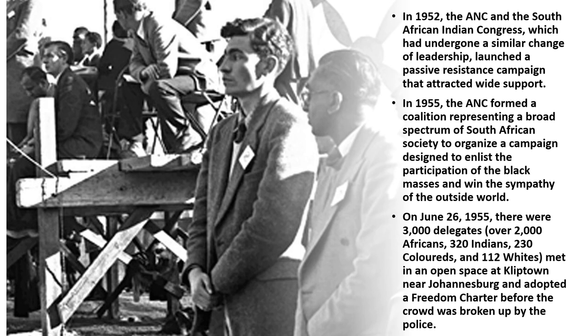In 1952, the ANC and the South African Indian Congress — which had undergone a similar change of leadership — launched a passive resistance campaign and attracted wide support. Large numbers of volunteers defied discriminatory laws and 8,000 were arrested. The ANC called off the campaign early in 1953, however, after rioting had broken out in Port Elizabeth, East London, Cape Town, and Johannesburg, and parliament had enacted severe penalties for civil disobedience.